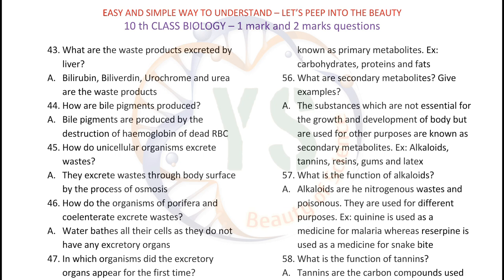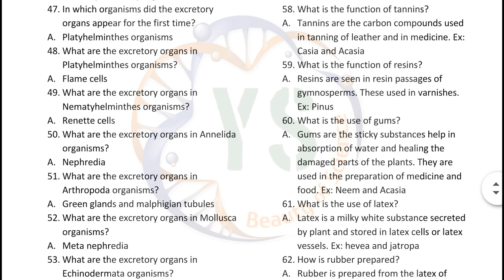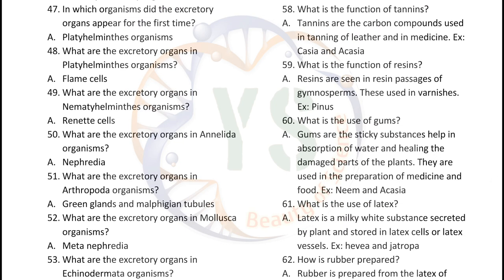What is the function of alkaloids? Alkaloids are nitrogenous wastes and poisonous. They are used for different purposes, e.g., quinine is used as a medicine for malaria whereas reserpine is used as a medicine for snake bite. What is the function of tannins? Tannins are carbon compounds used in tanning of leather and in medicine, e.g., Acacia. What is the function of resins? Resins are seen in resin passages of gymnosperms and are used in varnishes, e.g., Pinus.